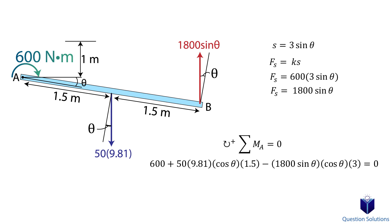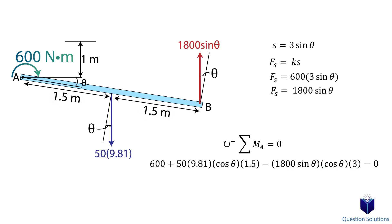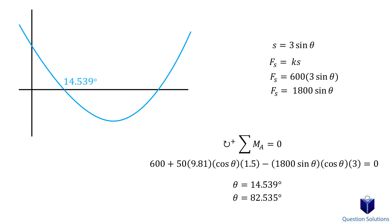Let's go over this equation. First, we have the 600 N·m moment applied at A. Then we look at the weight of the cylinder — only the y-component creates a moment, since the x-component's line of action goes through point A. The perpendicular distance is 1.5 meters. The same is true for the spring force: only the y-component creates a moment, and the perpendicular distance is 3 meters. We assumed clockwise moments to be positive, so the spring force creates a counter-clockwise moment. Solving for theta and looking for values between 0° and 90°, if you graph it you will see there are two such values — and those are our answers.